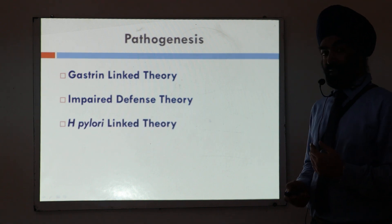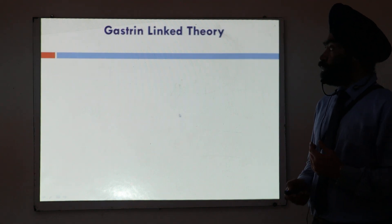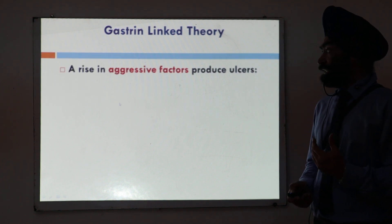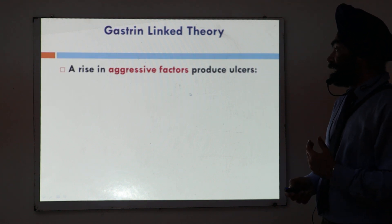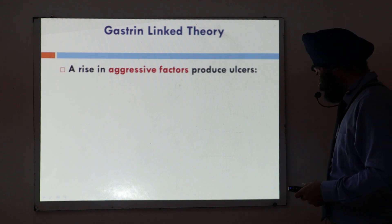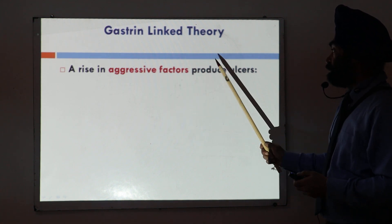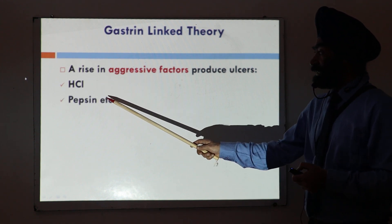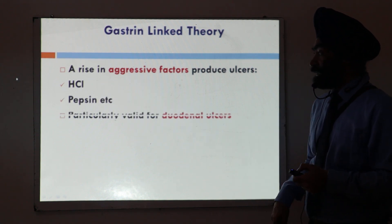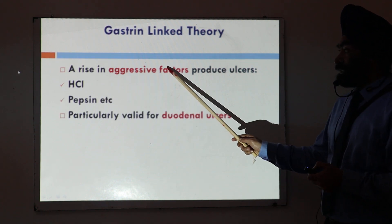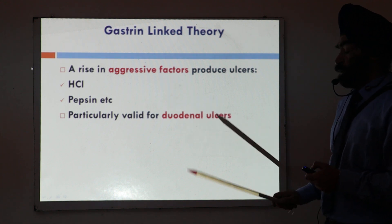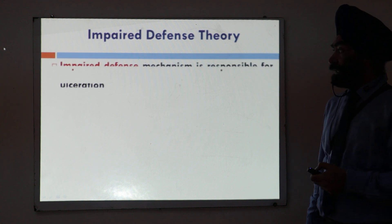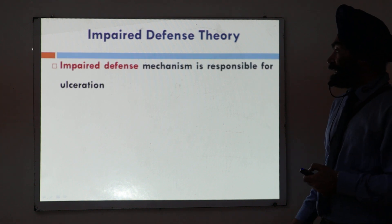So first, the gastrin link theory. It says that an increase in aggressive forces is responsible for the ulcers. Increase in aggressive forces means increase in HCL and increase in pepsin. This kind of theory is particularly valid for duodenal ulcers.